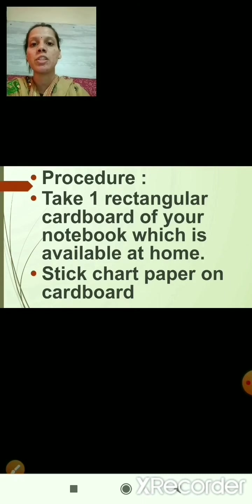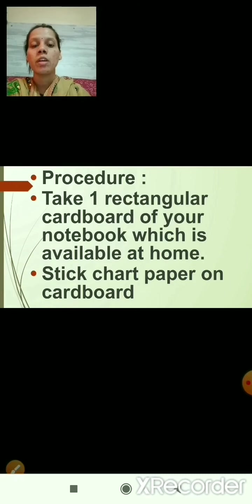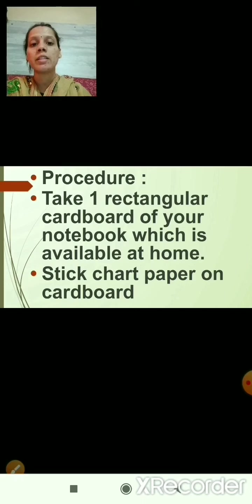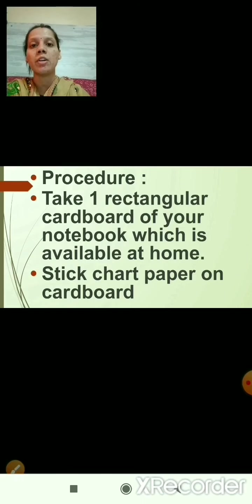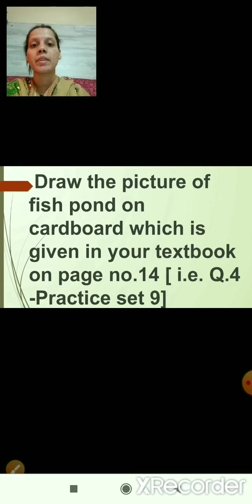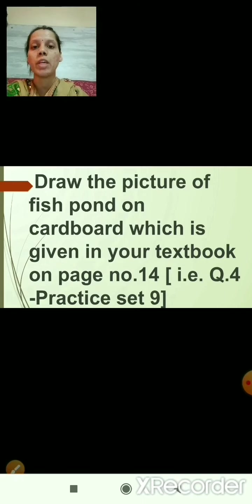The procedure is: take one rectangular cardboard of any size, which is available at home. Then stick chart paper on the cardboard. If you don't have chart paper, you can use white color drawing paper. After that, draw the picture of a fish pond on the cardboard, which is given in your textbook on page number 14.